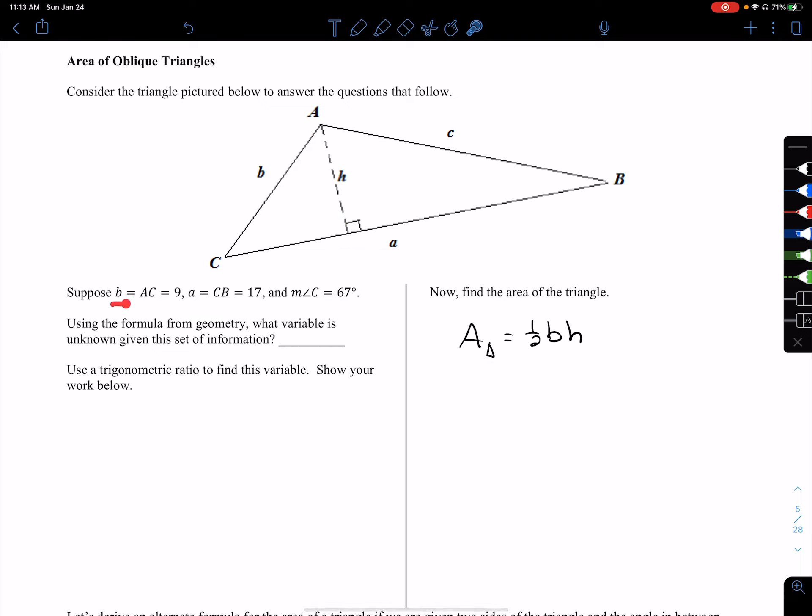Suppose that b, which is AC, is 9 in length. So let me add this to my picture. And that a, which is CB, is 17 in length, so our base is 17. The measure of angle C is 67 degrees. So instead of knowing the height, we know one of the sides we're not using as the base, and we know one of the angles between the two sides that we were given. In other words, we're given two sides and an included angle.